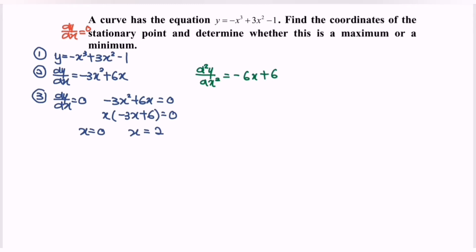Then substitute the situation into the first part where we have y = -x³ + 3x² - 1. So if we substitute 0, the value of y will be equal to -1.